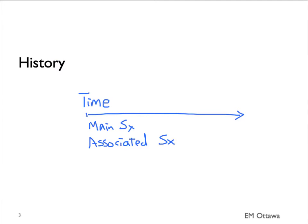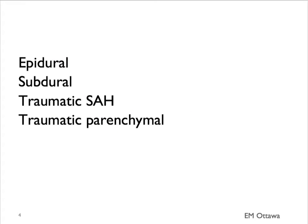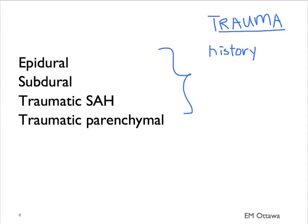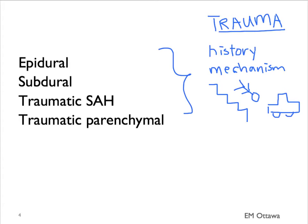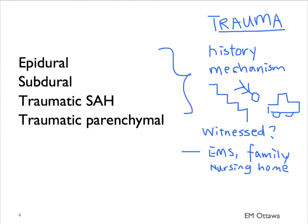Let's go into the details for the specific diagnosis. Epidural, subdural hematoma, and traumatic subarachnoid and traumatic parenchymal bleed are from trauma. Therefore, we need to find out whether there is a history of trauma, what mechanism is involved, whether this is a fall or a motor vehicle collision. We will want to find out whether the event was witnessed, gathering information from EMS personnel, family members, or nursing home staff.